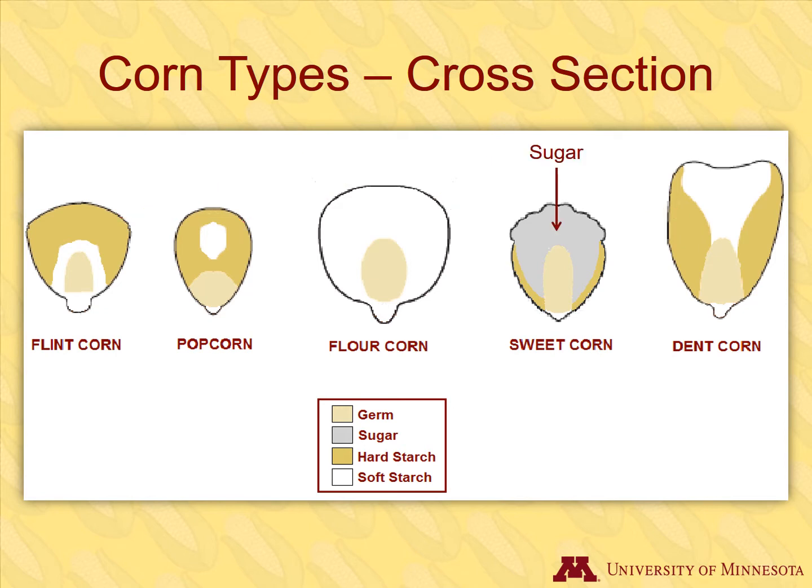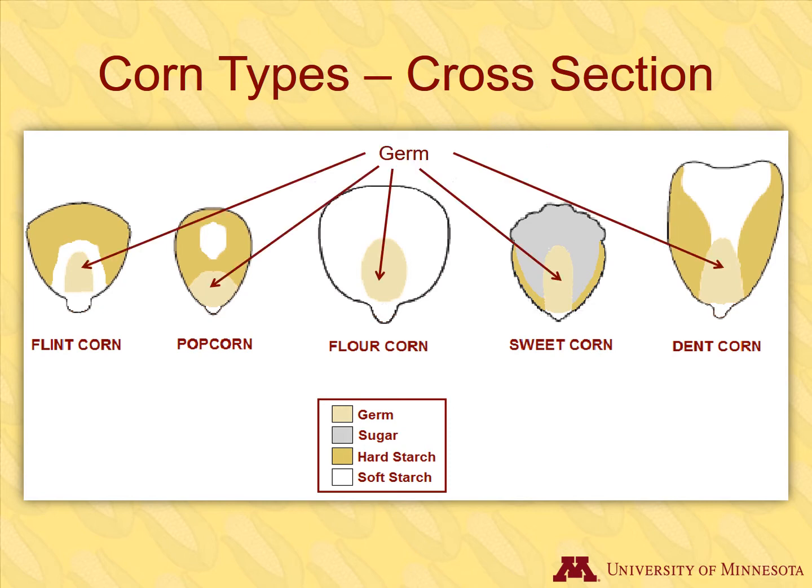Sweet corn, unlike the other corns, has high amounts of sugar in its kernel. And of course, all corn types have a germ, which is the living portion of the seed, or the embryo.